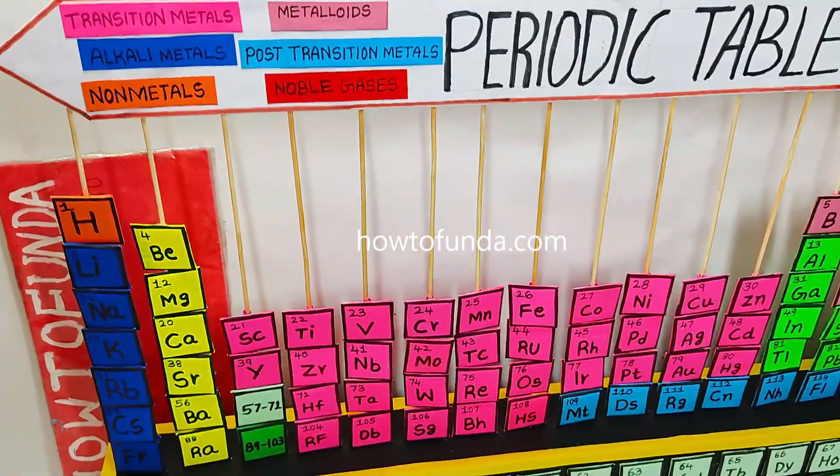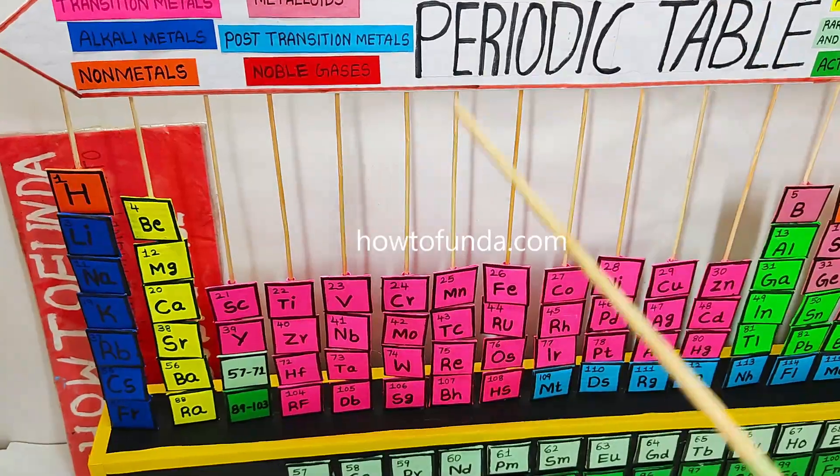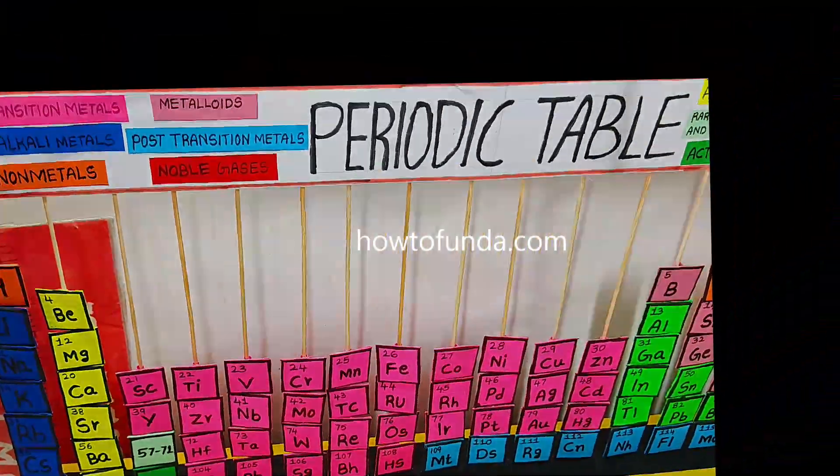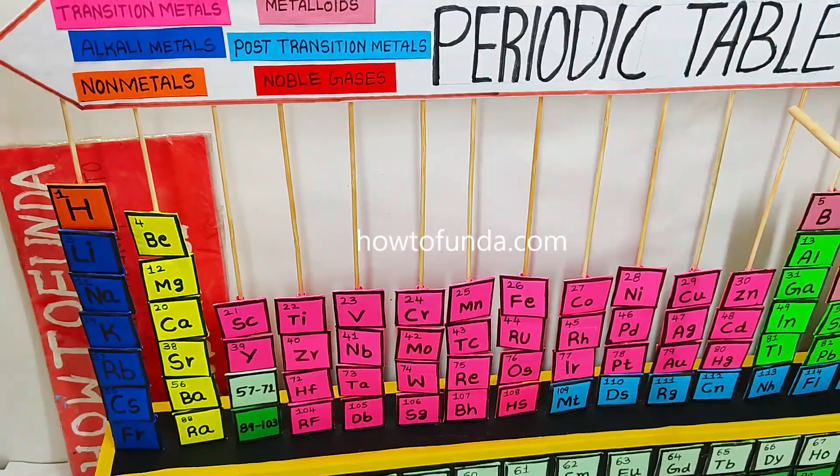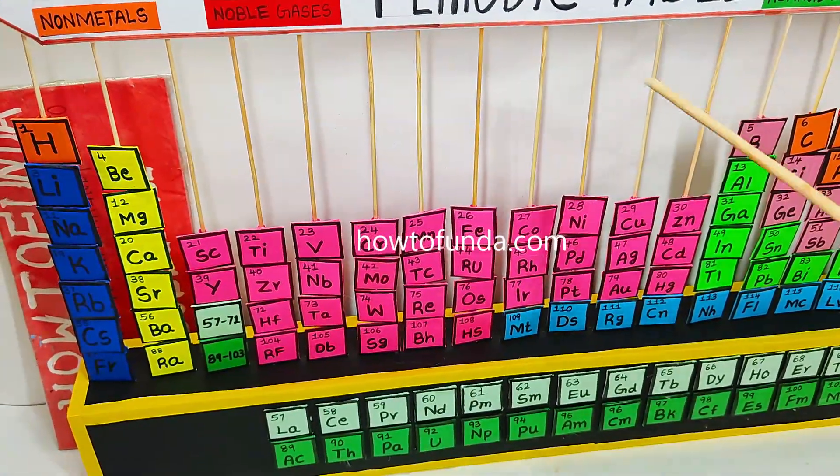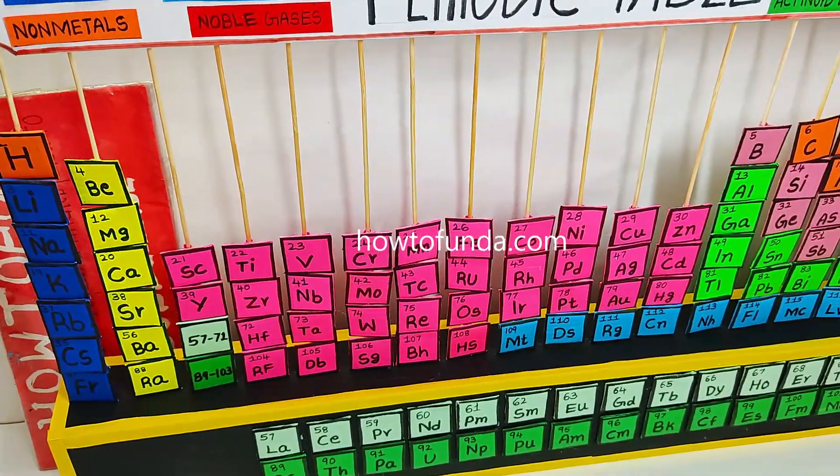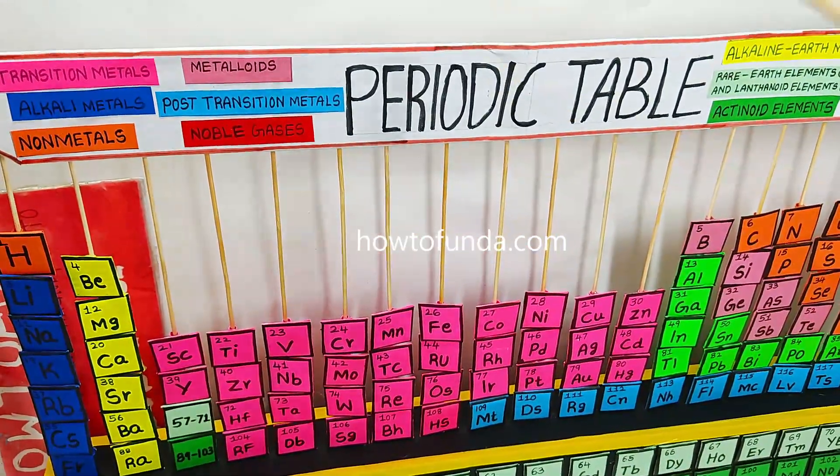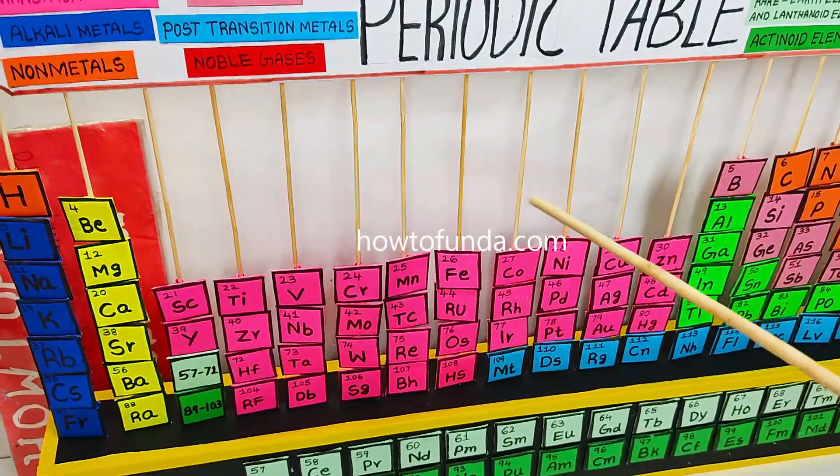This periodic table was first created by Dimitri Mendeleev and is now a fundamental part of studying chemistry. This periodic table is made up of using cardboard, and you can see we have created small colored boxes that represent chemical elements.